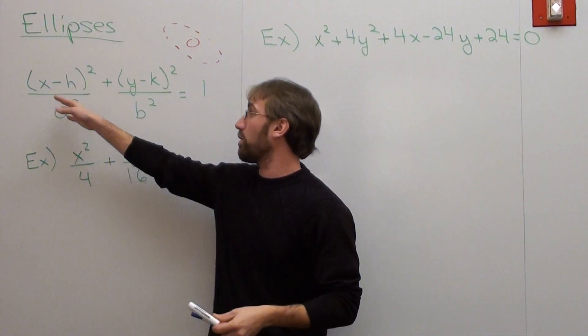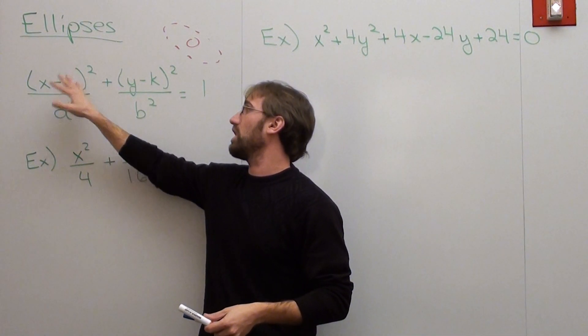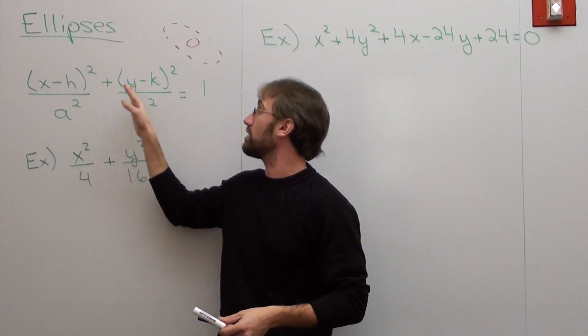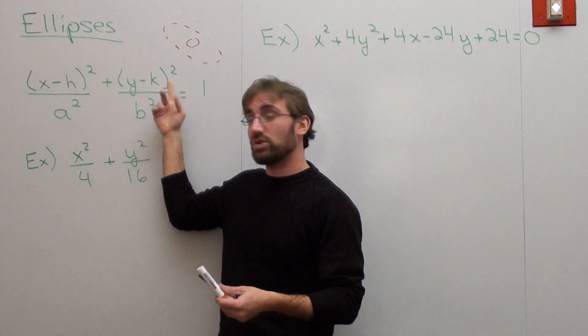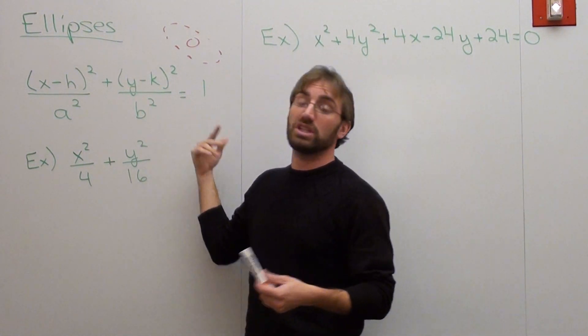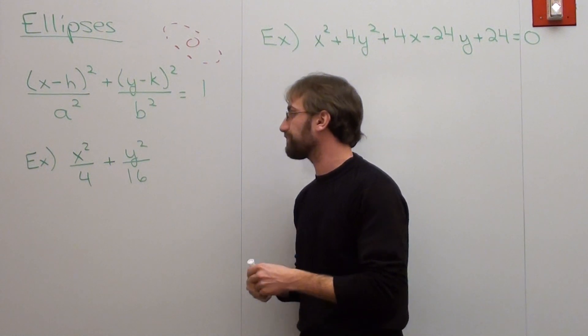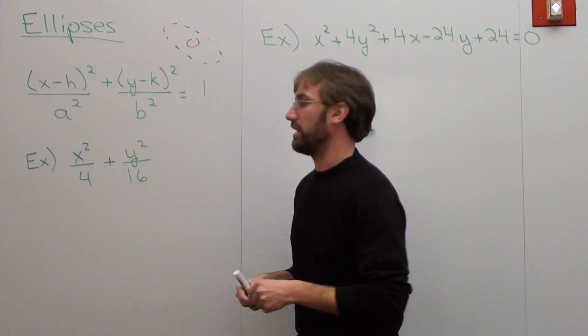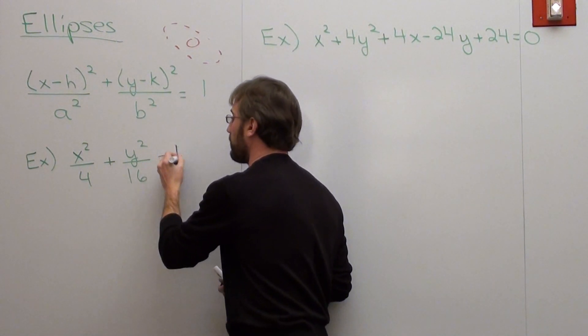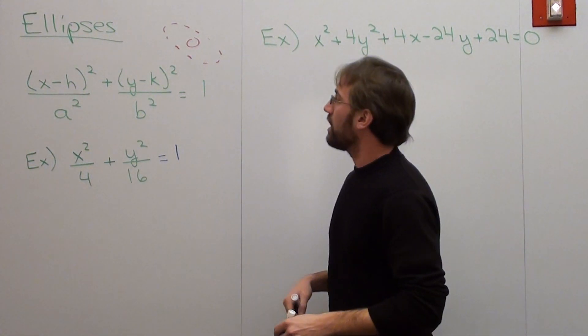So here's the basic formula for an ellipse. It's (x-h)² over a² plus (y-k)² over b², and it's supposed to equal 1. Which reminds me, I wrote this example wrong. It's actually supposed to be equal to 1.